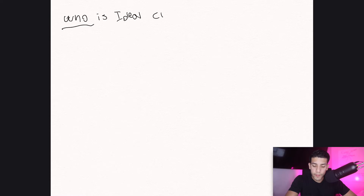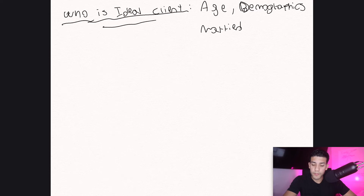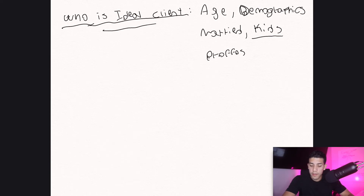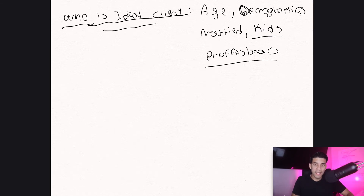Let's jump into the iPad and draw out these five questions. Question one: who is your ideal client? You want to answer how old are they — their demographics. Are they married? Do they have kids? Do you like to work with professionals? Do they have degrees? For example, if you're trying to target a 40-year-old professional who is married with kids, they're probably going to be on LinkedIn or Instagram.